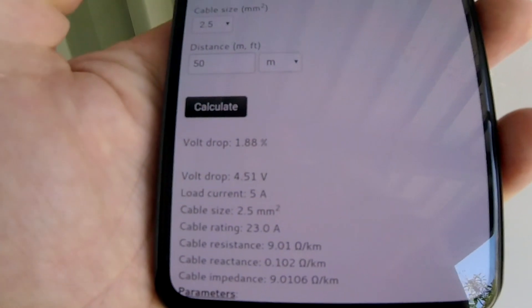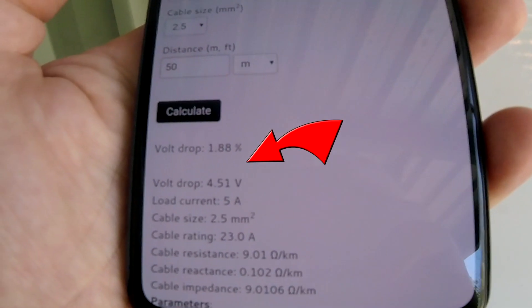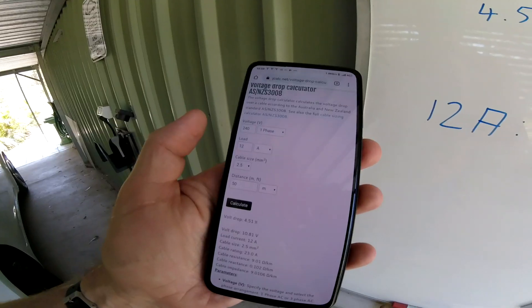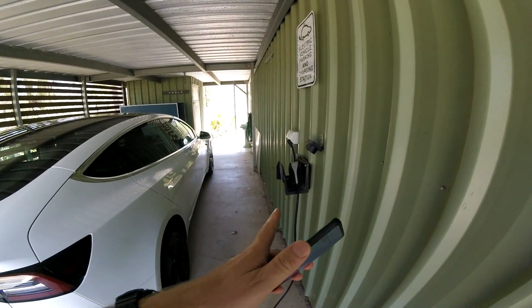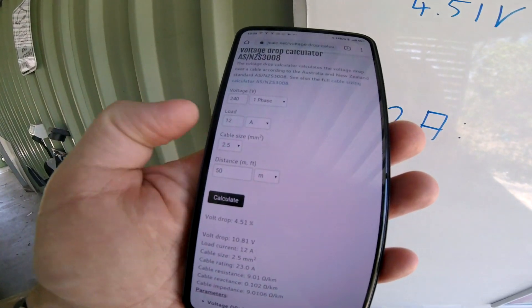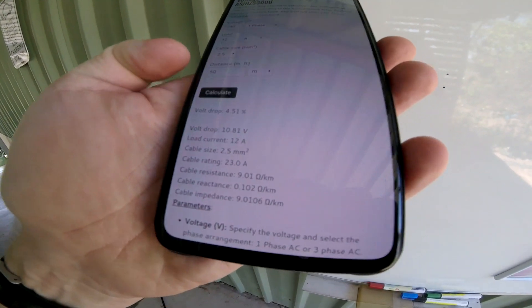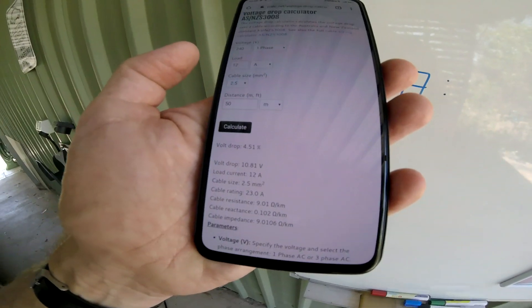We are having a voltage drop of 4.51 volts, 1.88 percent. And we are quickly doing the 12 amp setting as well, which will be the highest setting you can actually charge the car with the mobile UNC adapter for the Tesla. And 12 amps, same cable, same cable length, gives us 10.81 volts.